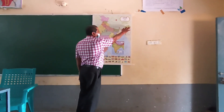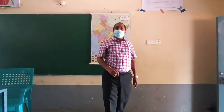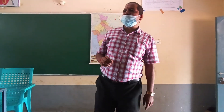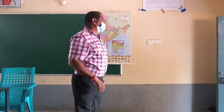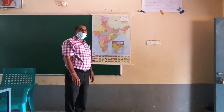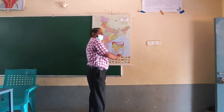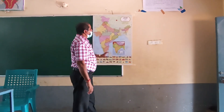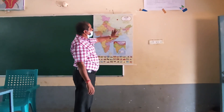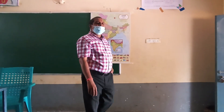These seven states are called the Seven Sisters of India. But Sikkim state is called the brother of the seven sisters. These eight states are called the North Eastern states of India.